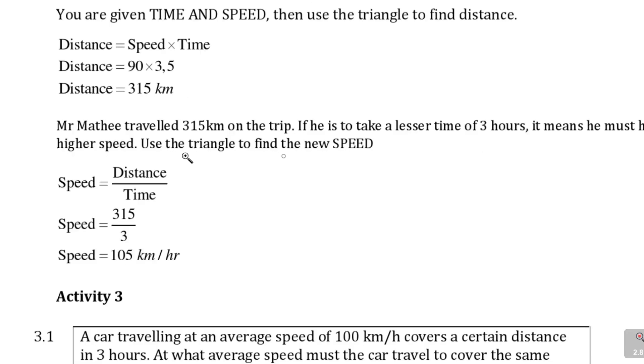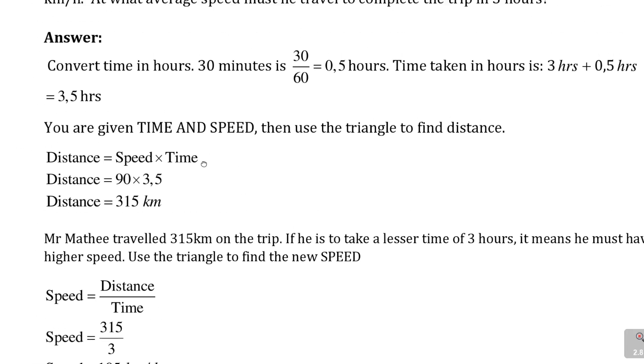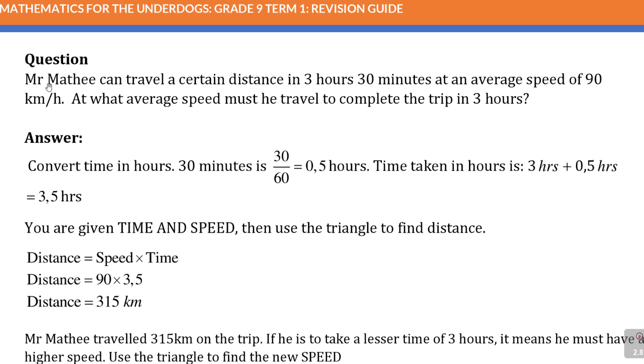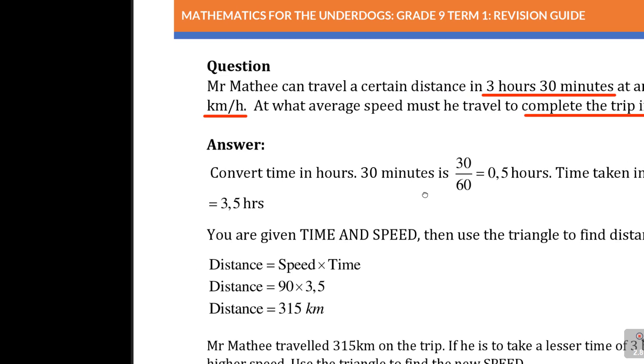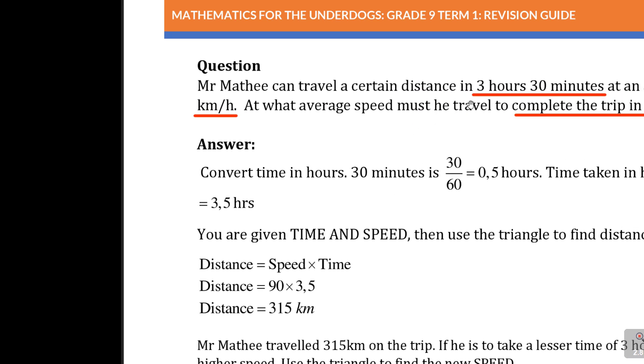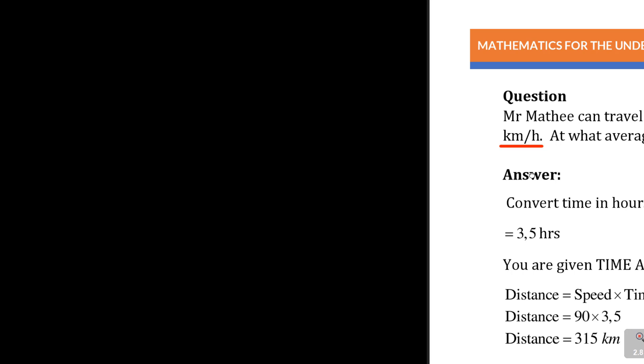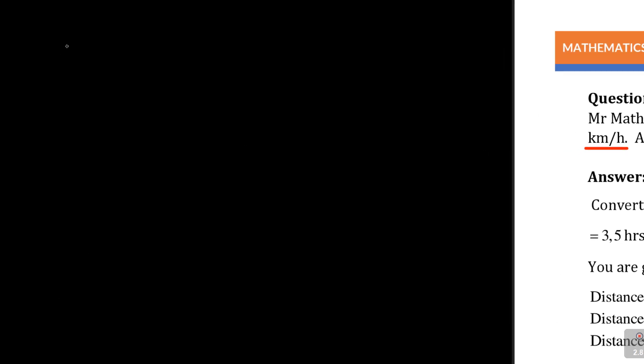Now look at the question here. We're going to work it together. It says Mr. Mati can travel a certain distance in three hours, 30 minutes at an average speed of 90 kilometers per hour. At what average speed must he travel to complete his trip in three hours? Let's work this together. Three hours, 30 minutes—that's when I was telling you about these conversions.